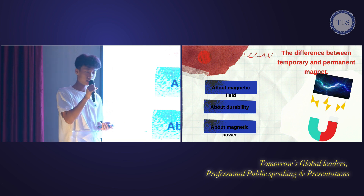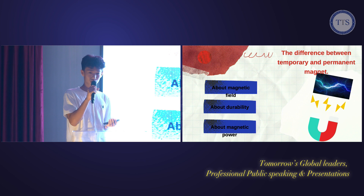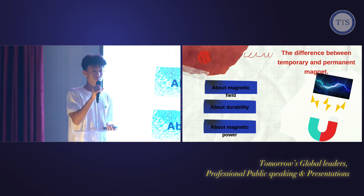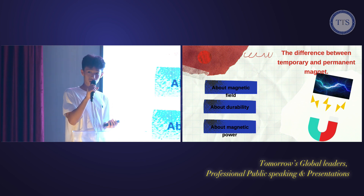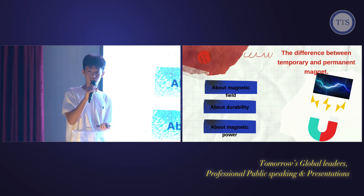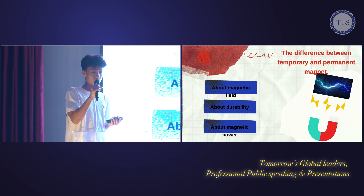About magnetic strength: the magnetic strength of a magnet can be controlled by the amount of current allowed to flow into it. Therefore, the magnetic strength of permanent magnets is determined by the material used in it and cannot be changed.